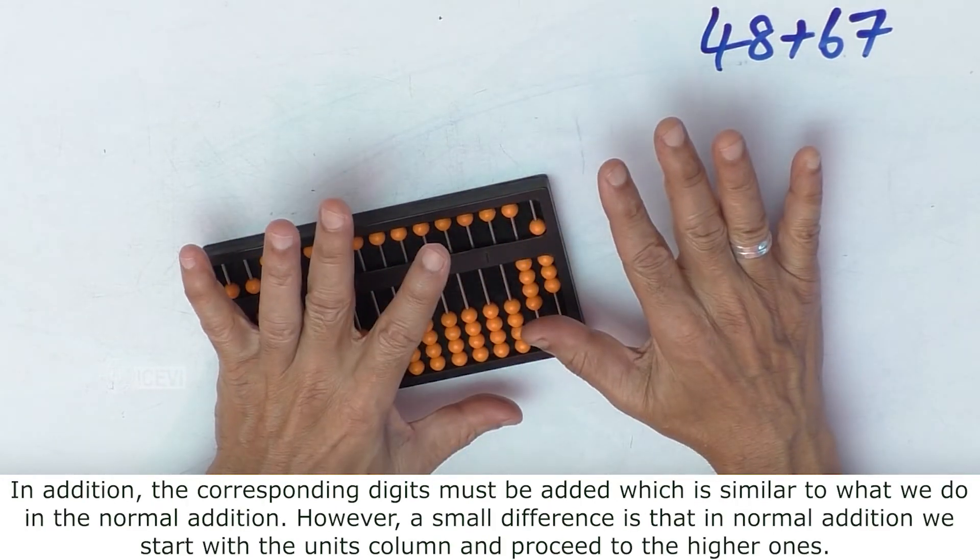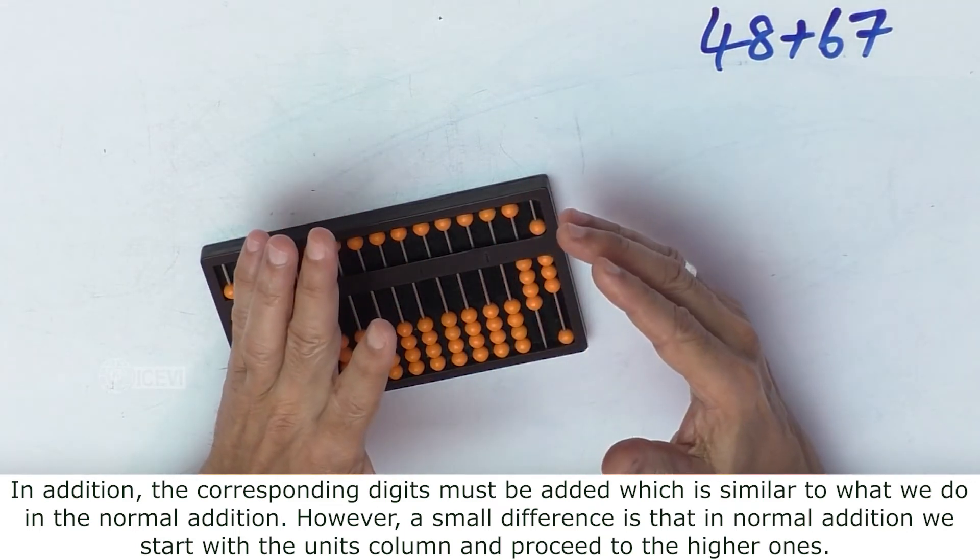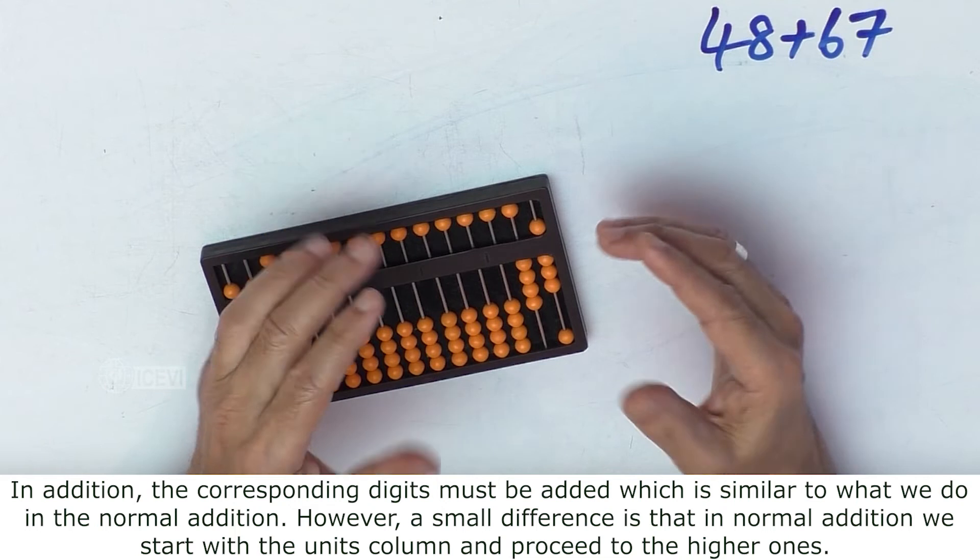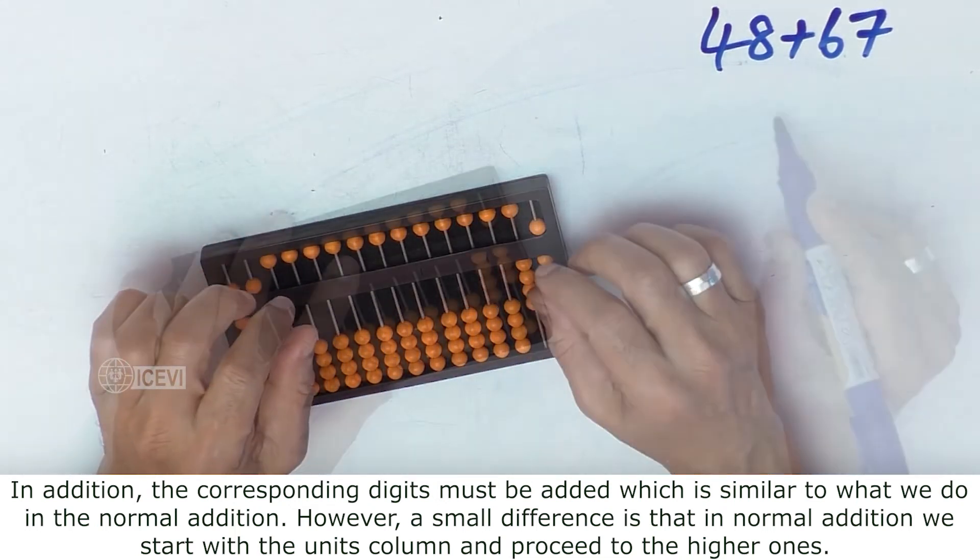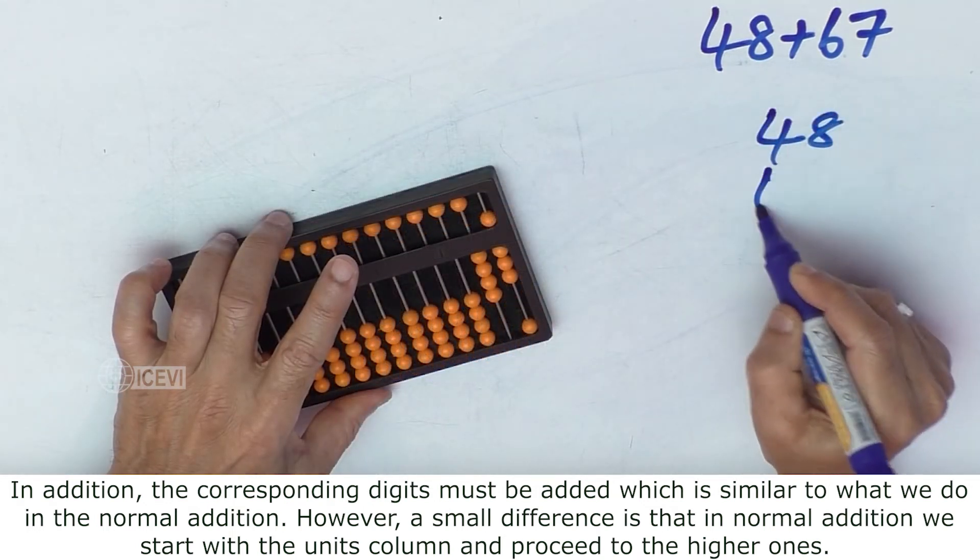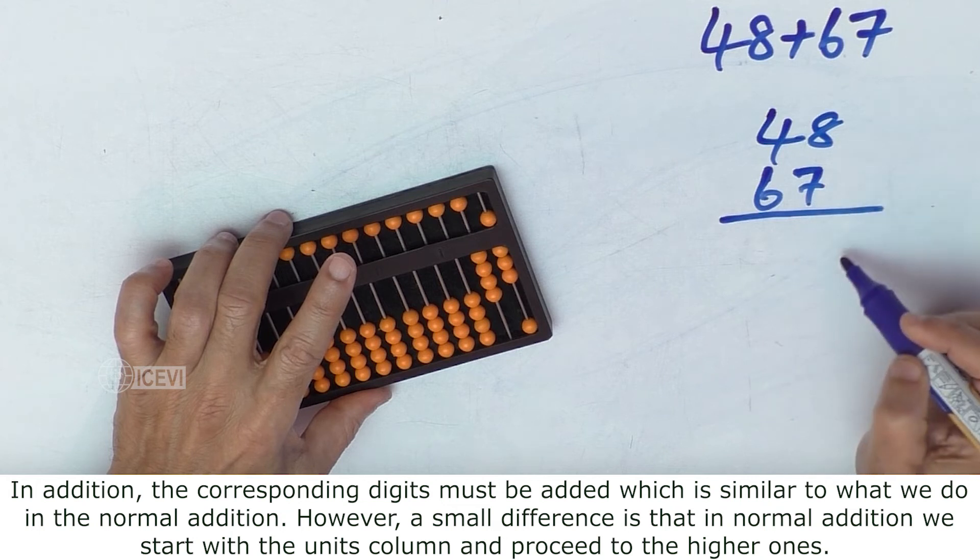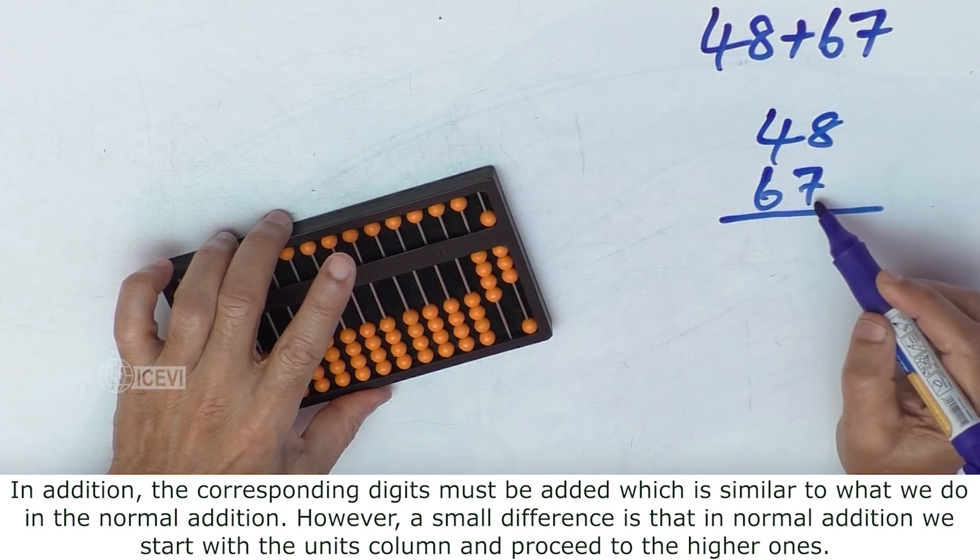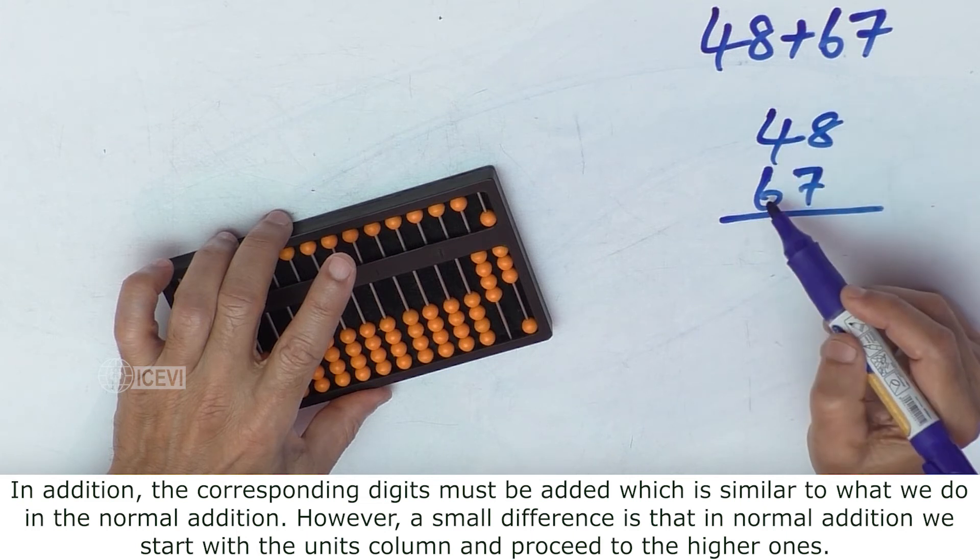In addition, corresponding digits must be added, which is similar to what we do in normal addition. However, a small difference is that in normal addition, we start with the units column—8 and 7—and then proceed to the higher ones, that is 6 and 4.